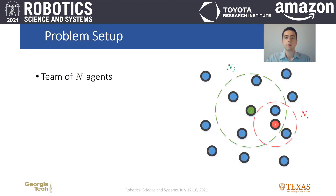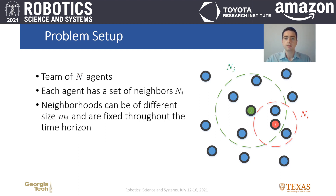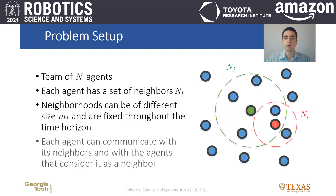In our problem setup, we will consider a team of N agents where each agent has a set of neighbors. These sets can be of different size, while we assume that they are fixed throughout the time horizon. We also assume that every agent can communicate with its neighbors and with the agents that consider it as a neighbor.